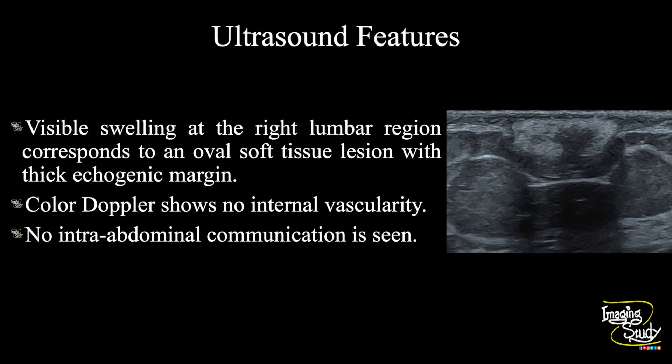In summary, there is a visible swelling at the right lumbar region which is an oval soft tissue lesion with peripheral thick hyperechoic margin. Color Doppler shows no internal vascularity, and there was no intra-abdominal communication or surrounding architectural distortion. So these features conclude this as a case of superficial fat necrosis.